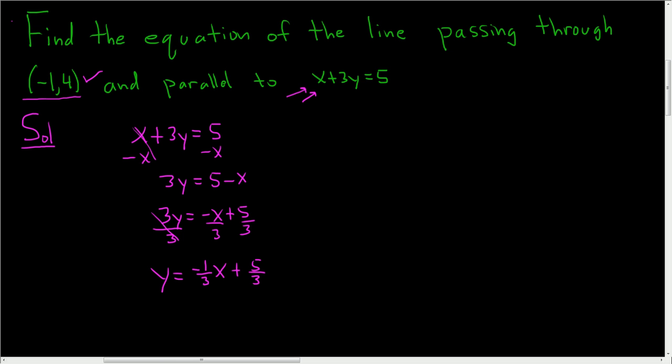So the slope of this line is negative 1 third. Since our line has the same slope, our line has a slope of negative 1 third as well.